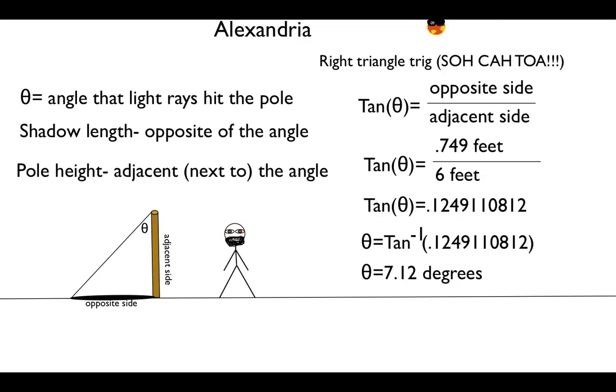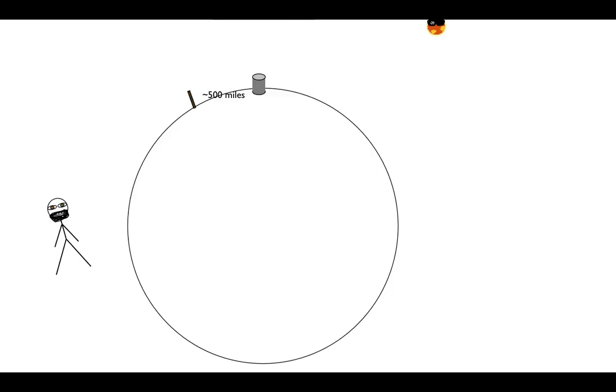So now, possibly the most brilliant part of his idea was that he extended a line from the well into the surface of the earth, and then he extended a line from the pole into the surface of the earth, and they intersect at the center of the earth. And then he also extended the light ray into the surface of the earth. And now what we have is we have two parallel lines - the orange line is parallel to the gray line.